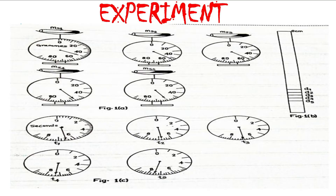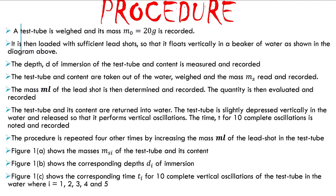What are we expected to do? In this particular experiment we are expected to first weigh the test tube and record the mass. Once you have weighed it and recorded the mass empty, you load it with sufficient lead shots so that it can float vertically in a beaker of water. Once loaded and immersed, the next step is to measure the depth of immersion d from the scale on the test tube.